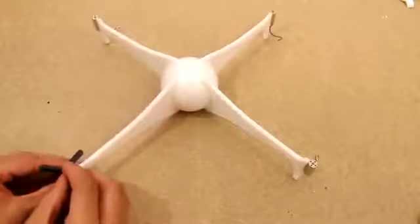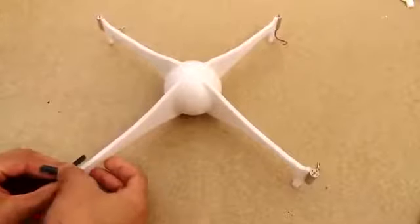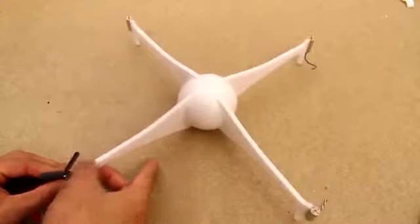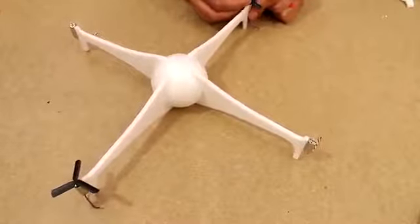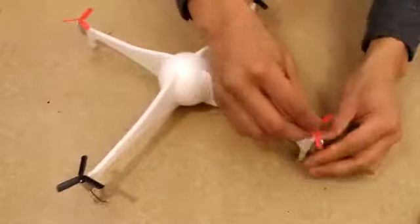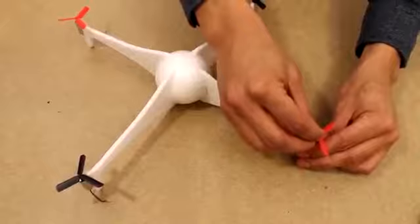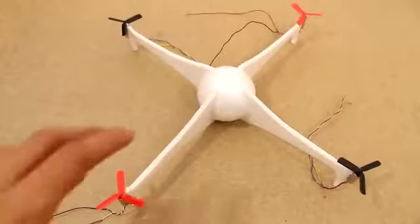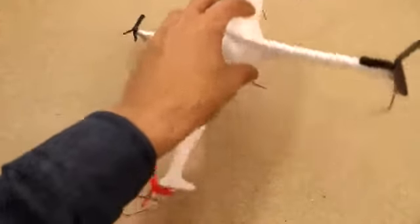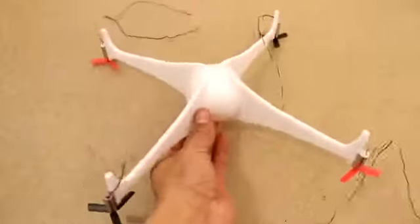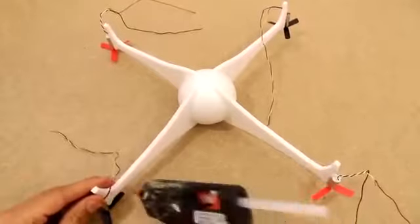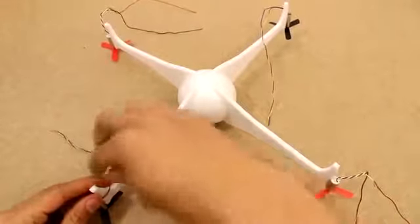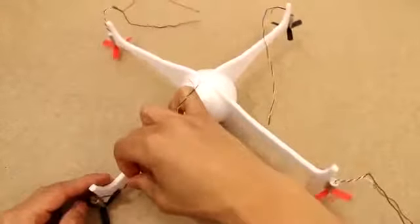Now we're going to put propellers on. If you look at the propellers, you'll notice some of them spin in different directions. So you end up having two clockwise and two counterclockwise. So the two red ones in our case are clockwise and the two black ones are counterclockwise. And basically the reason why we have them spin in opposite directions is so that the quadcopter doesn't end up twisting. The opposite directions that they spin in cancel out any rotation.